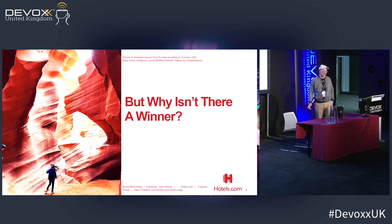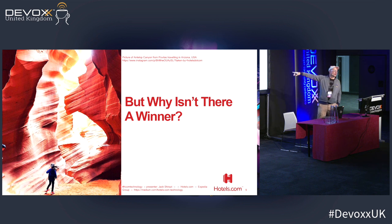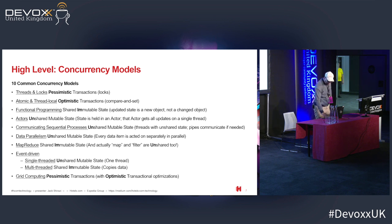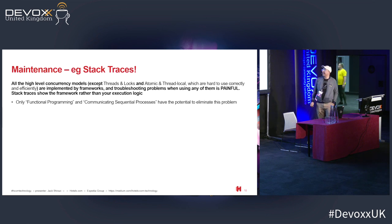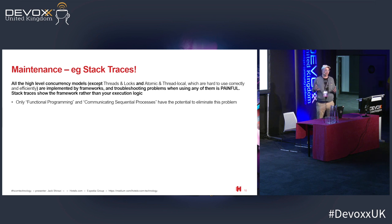So why isn't there a winner? We've had 25 years of locks, 15 years of optimistic, 30 years of event-driven applications. The reason there isn't a winner is maintenance. Each of these frameworks is actually taking away problems from you — apart from the first two where you're doing it all yourself, the models are all there to reduce bugs and take away the effort of dealing with concurrency. That's excellent — that's what you want.